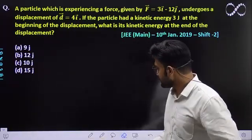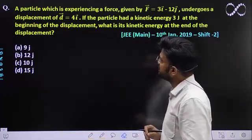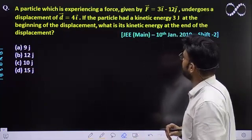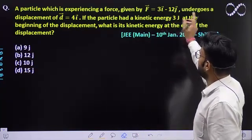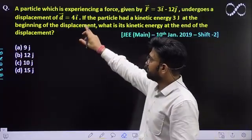Just let this question see. A particle which is experiencing a force given by F equals 3i cap minus 12j cap undergoes a displacement of d equals 4i cap.